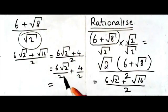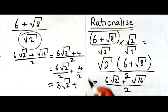Now, here we've got six divided by two. It gives me three. And I'm left with square root of two plus four divided by two gives me two. And that's my final answer.